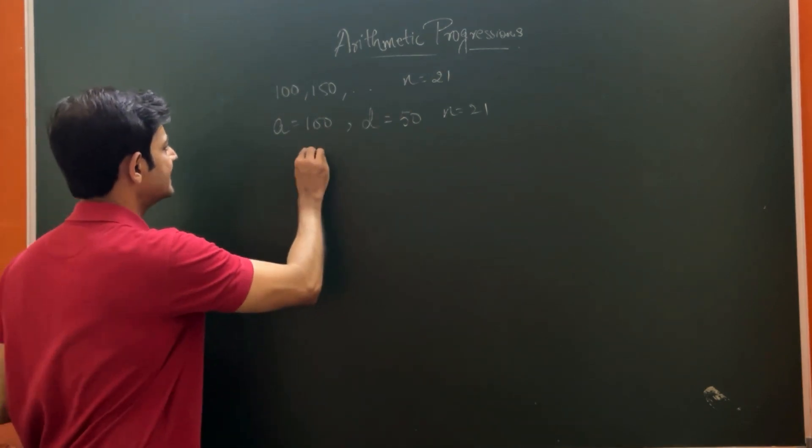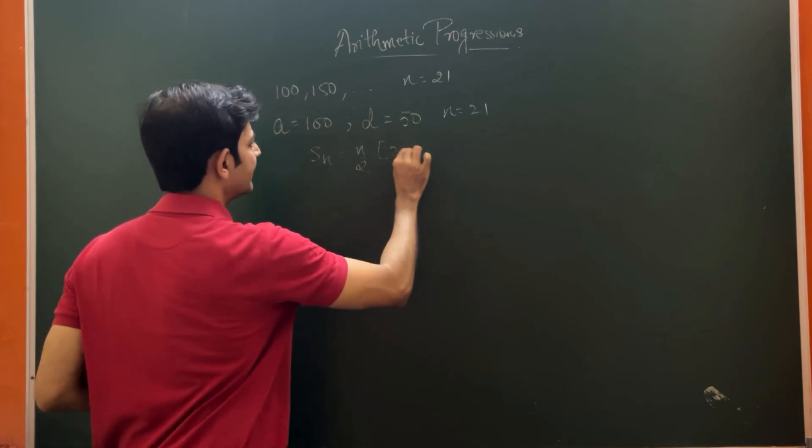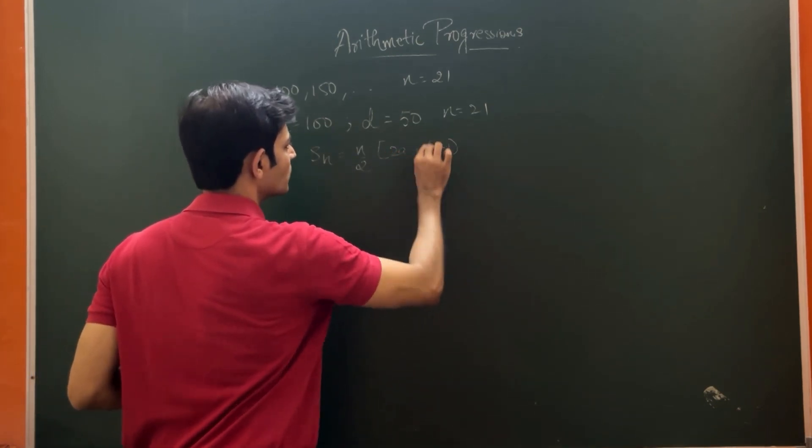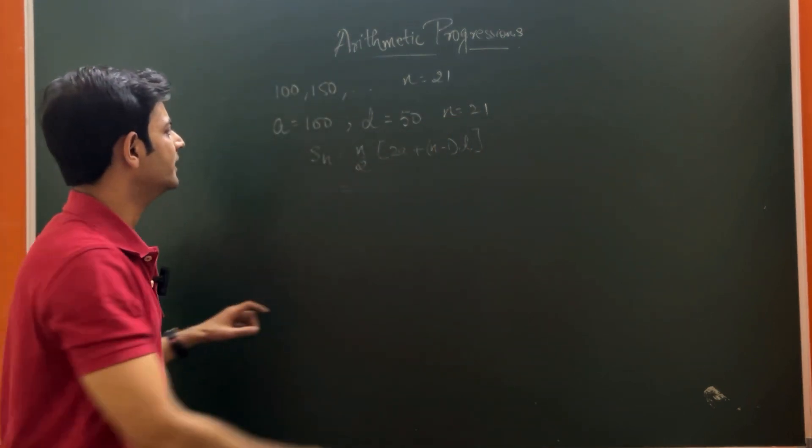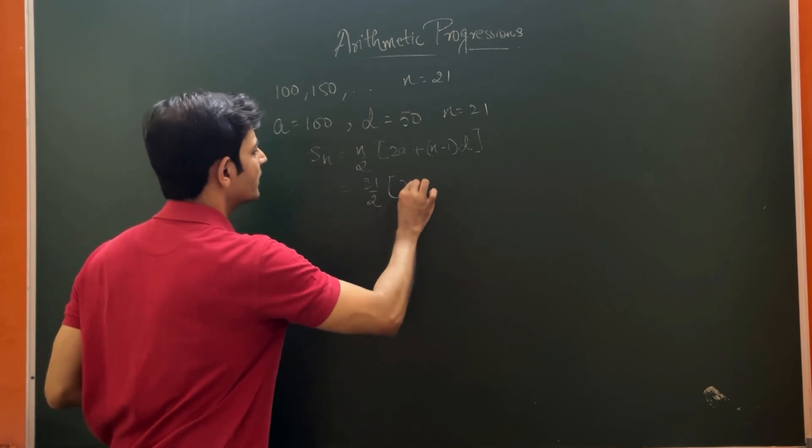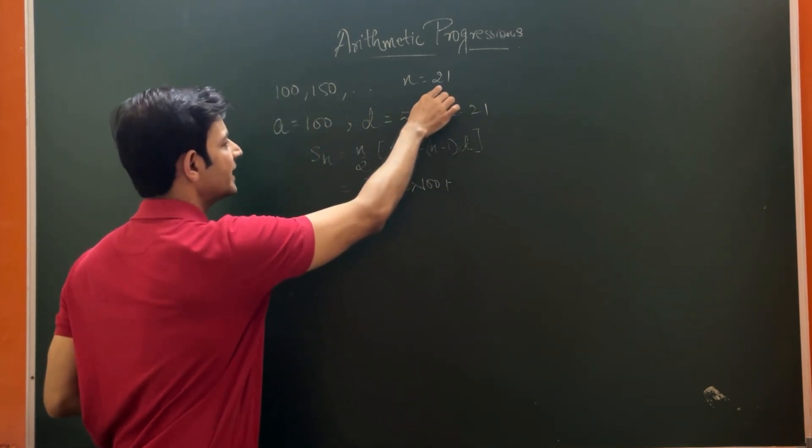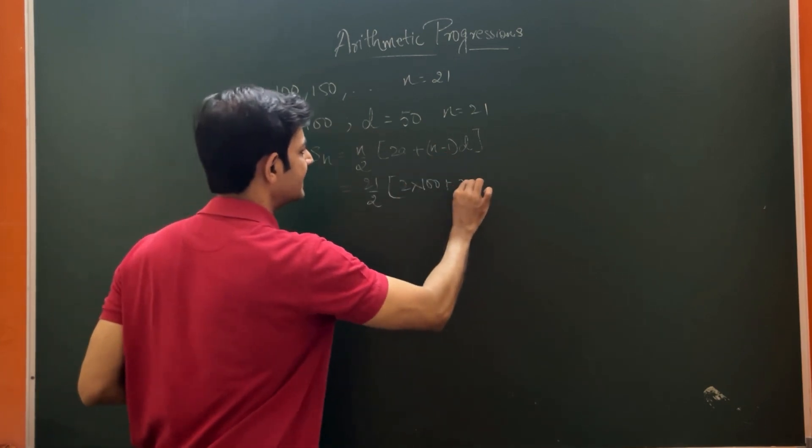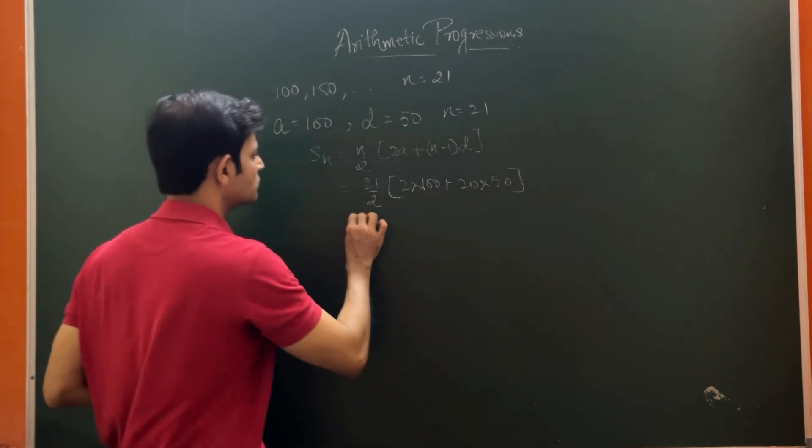We just learned the formula that is SN is equal to N by 2 into 2A plus N minus 1 into D. We will just put the values here. N is equal to 21, so N is equal to 21 by 2 into 2 into what is A here? 100 plus 21 minus 1 which is 20 into D is 50.